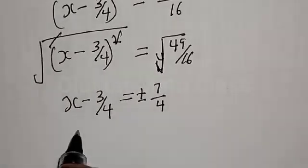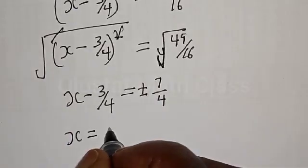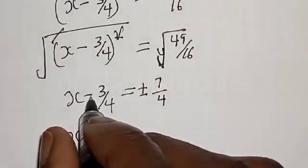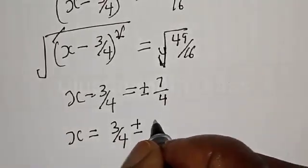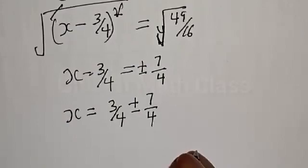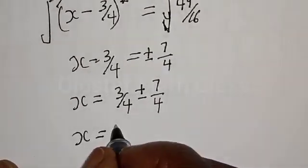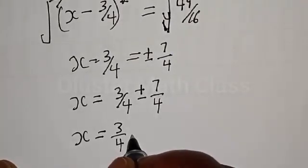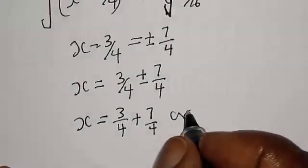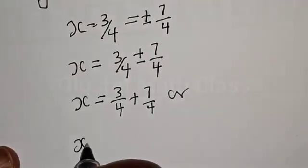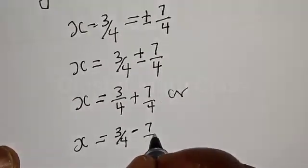Therefore, isolating s: moving -3/4 across the equal sign gives +3/4 on the right side. So s = 3/4 ± 7/4. That means s = 3/4 + 7/4 or s = 3/4 - 7/4.